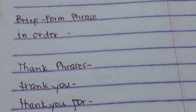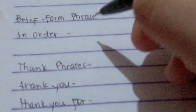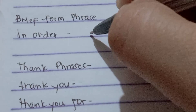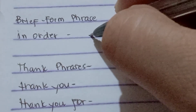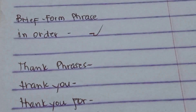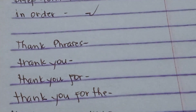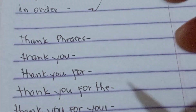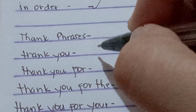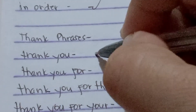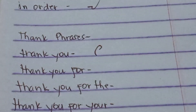For our brief form phrases we have only one: 'in order.' If we are going to write this in shorthand outline, it is only N then O and D only. 'In order.' But we also have thank phrases — just like 'thank you,' which in shorthand outline is only over-E and U.